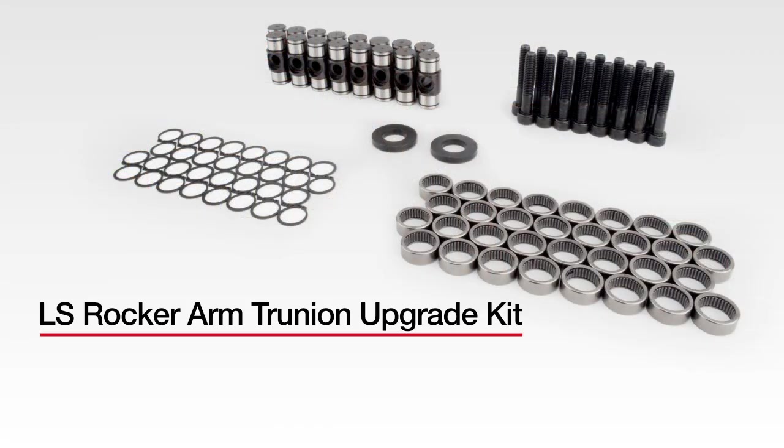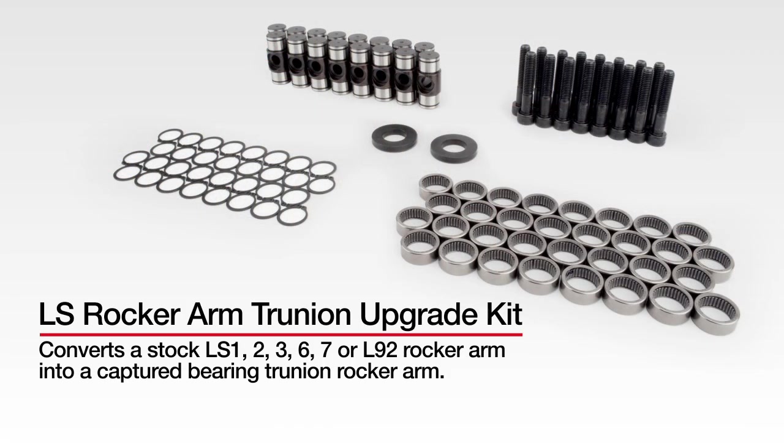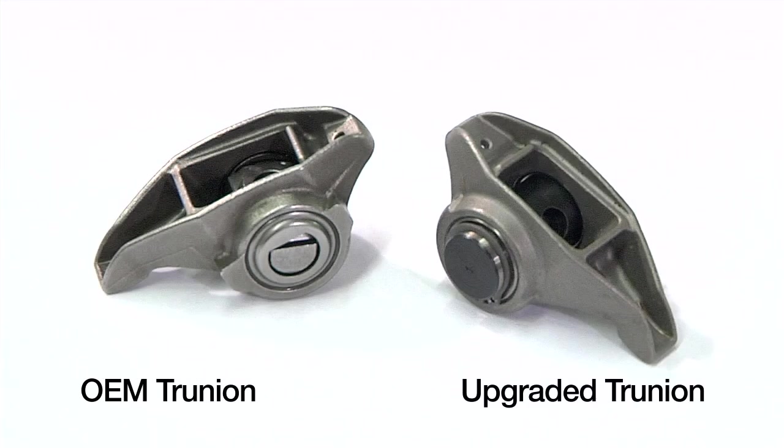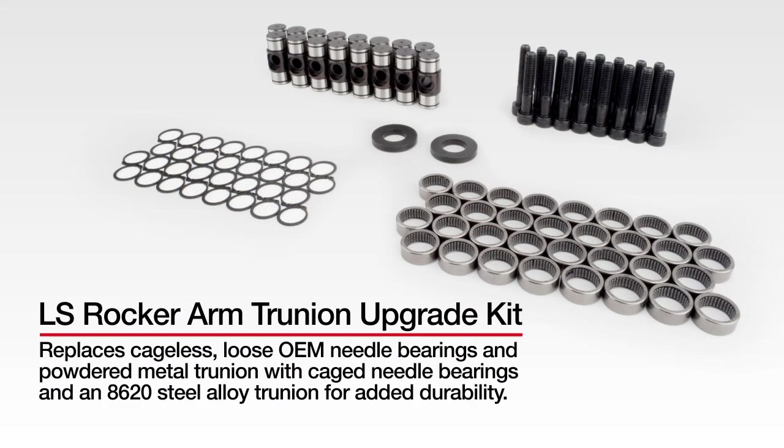The CompCams LS Rocker Trunnion Upgrade Kit converts a stock LS1, 2, 3, 6, 7, or L92 rocker arm into a captured bearing trunnion rocker arm. This upgrade replaces the cageless loose OEM needle bearings and powdered metal trunnion with caged needle bearings and a premium 8620 steel alloy trunnion for added durability.